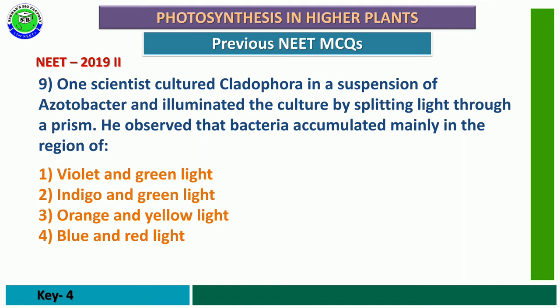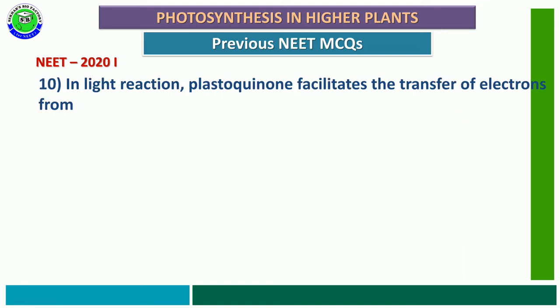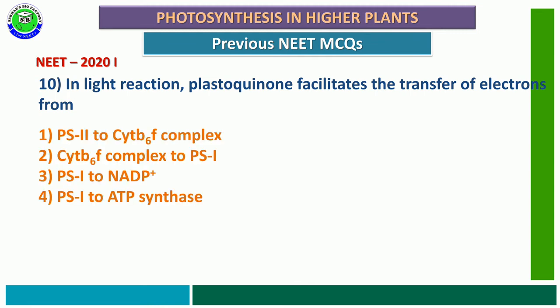Question number 10 from NEET 2020 phase 1: In the light reaction, plastoquinone facilitates the transfer of electrons from — PS2 to cytochrome B6F complex; cytochrome B6F complex to PS1; PS1 to NADP+; or PS1 to ATP synthase. The correct answer is the first option. Plastoquinone is present between PS2 and the electron transport system, and it facilitates the transfer of electrons from PS2 to the cytochrome B6F complex in the thylakoid membrane during the light reaction.